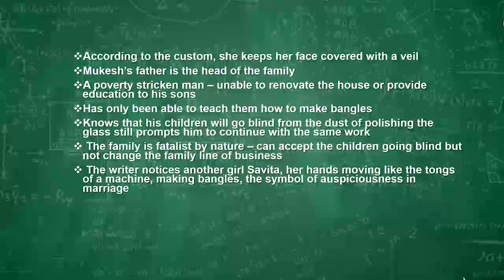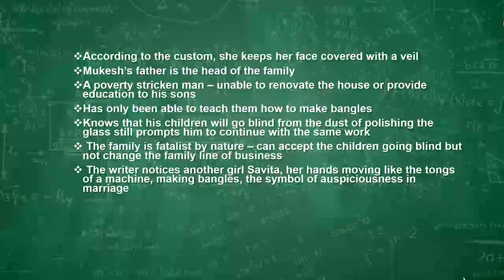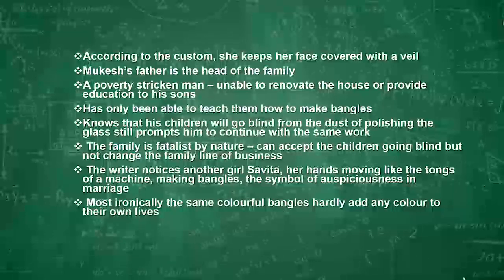The author also comes across a girl named Savita and is surprised to see that her hands move like the tongs of a machine — these children are so adept at making bangles that they work like robots. She wonders: does this young girl even know that the bangles she makes are a symbol of auspiciousness in marriage, and that while she spreads color into the lives of so many women, she herself lacks color in her own life?